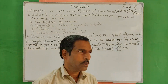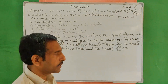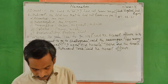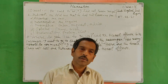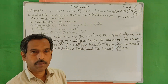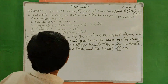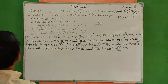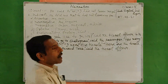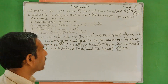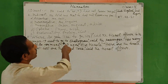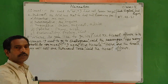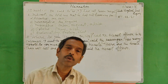We change narration from direct to indirect according to the type of sentence. There are five kinds of sentences: assertive, interrogative, imperative, optative, and exclamatory. We use different reporting verbs for each. For assertive sentences we use 'say' or 'tell'; for interrogative we use 'ask,' 'inquire of,' or 'demand of'; for imperative we use 'order,' 'request,' or 'advise'; for optative we use 'pray' or 'wish'; for exclamatory we use 'exclaim.'